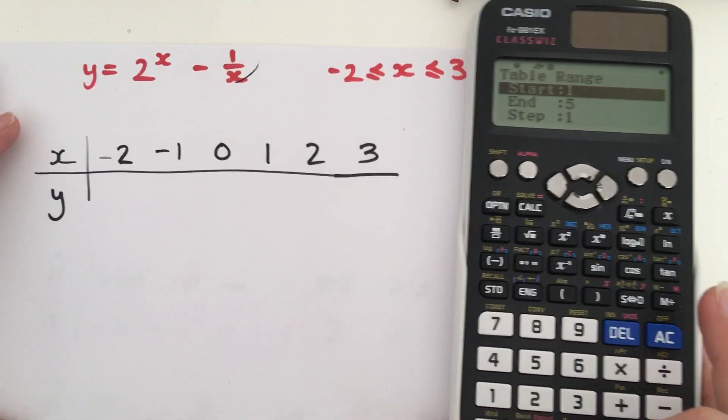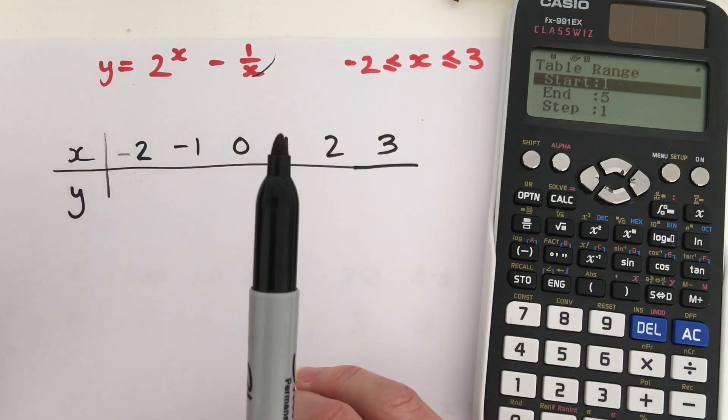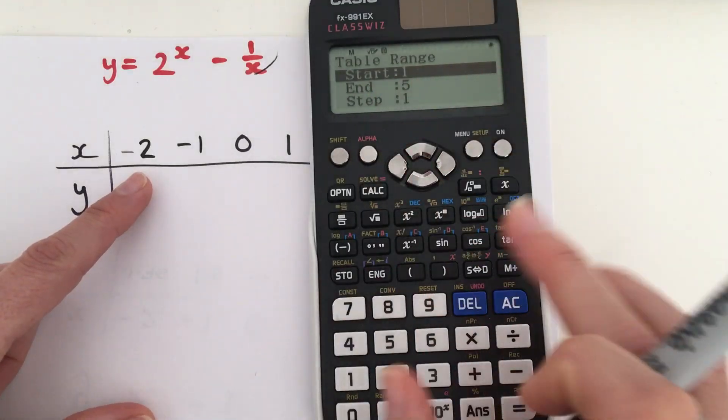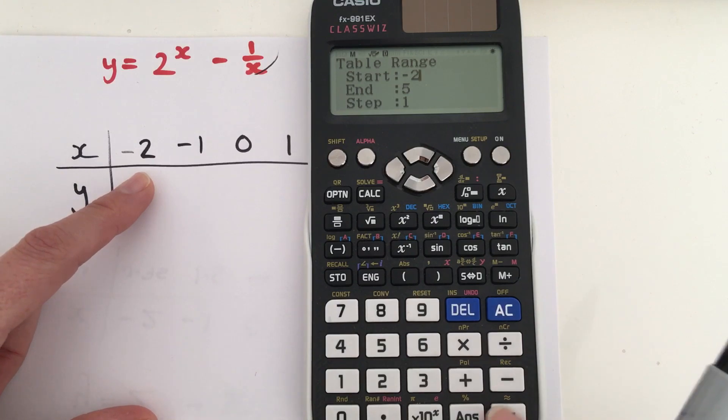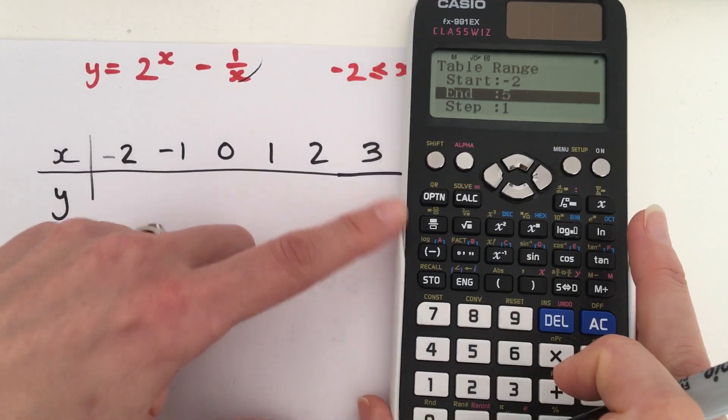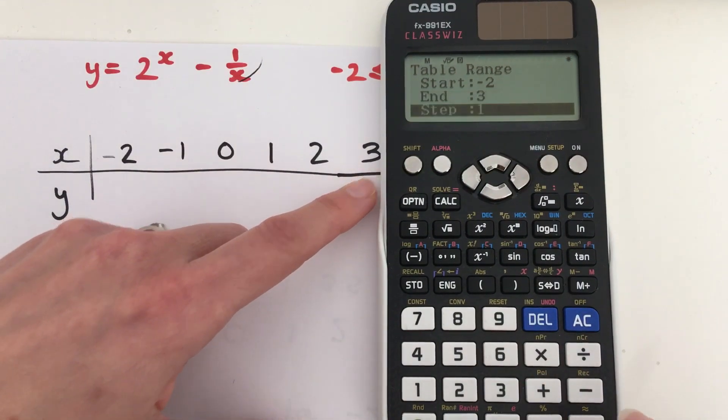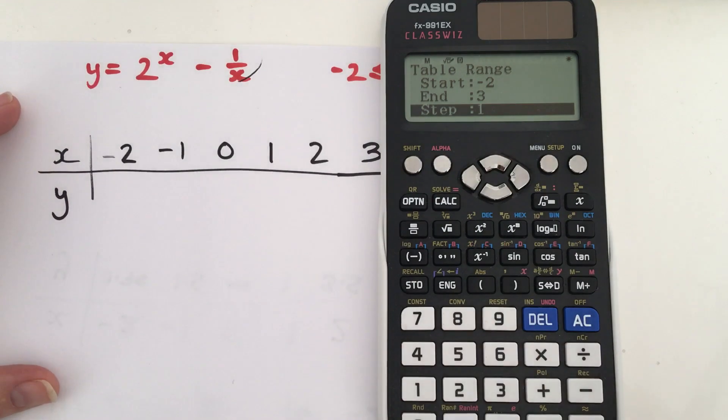Now, our table needs to go from minus 2 up to 3, including negative 2 and 3. So where do we want it to start? We want it to start at negative 2. Press equals, that'll take you down a row. And then it says where do we want it to end? It wants to end at 3. So, we're going to press 3 and press equals. And what does it want to go up in? It wants to go up in steps of 1. So, press equals through that.